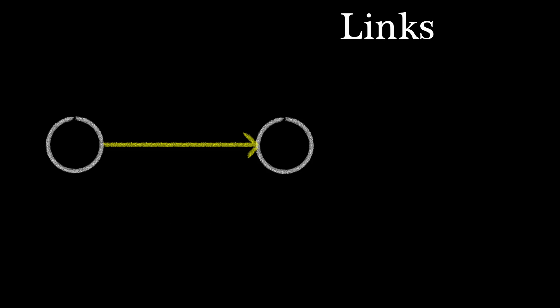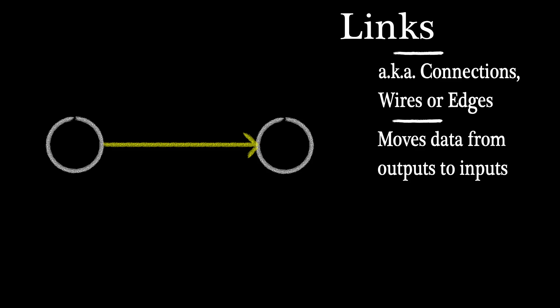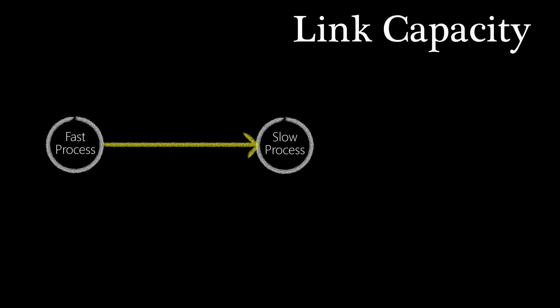Links, also called wires, connections, or edges, are the only way to pass data from node to node. In some situations, we need links to act like buffers, to hold more than one data packet at a time. The link capacity is the maximum number of data packets a link can hold.